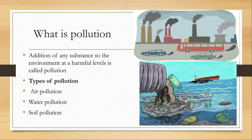What is pollution? Addition of any substance to the environment at harmful levels is called pollution. There are three main types of pollution: air pollution, water pollution, and soil pollution.